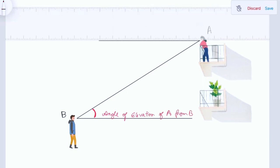That's the horizontal line for person A. Since this person is looking down, this is the angle of depression of B from A.